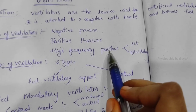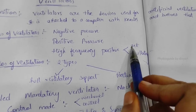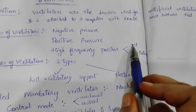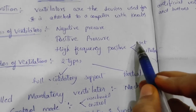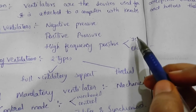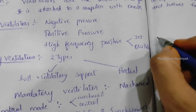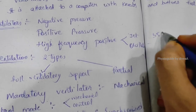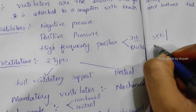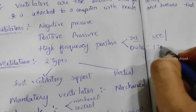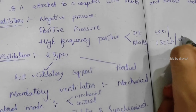High frequency positive ventilators are divided into jet and oscillatory types. In jet high frequency, 350 breaths are taken per minute. In oscillatory high frequency, 1300 breaths are taken per minute.